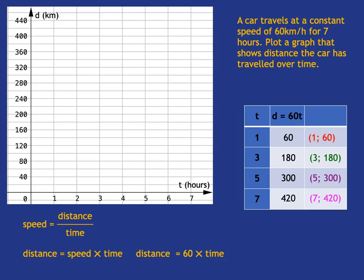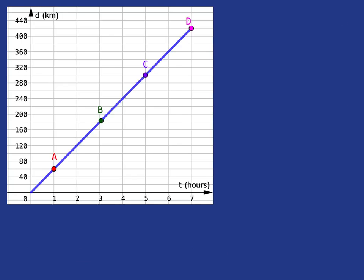All right, now I can easily plot my points. 1, 60 is over there, 3, 180 over there, 5, 300 is over there, and 7, 420 over there. And I see they're very nicely lying in a straight line. So I join them with a straight line, and that looks like that.